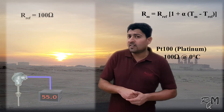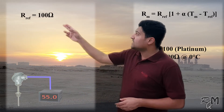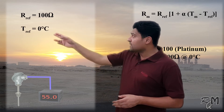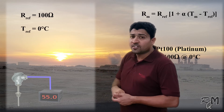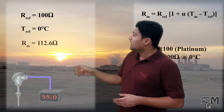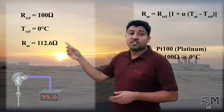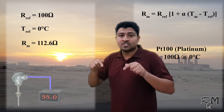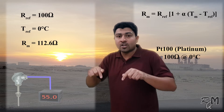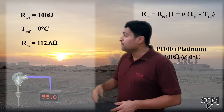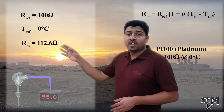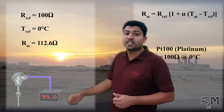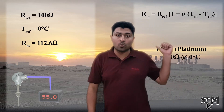In PT100, the reference resistance is equal to 100 ohms. The reference temperature is equal to 0 degrees centigrade. The measuring resistance — this is the resistance which we want to measure, it is the resistance which we are measuring on the terminal of the RTD. I am considering it 112.6 ohms to avoid a round figure and to check the accuracy of the equation.